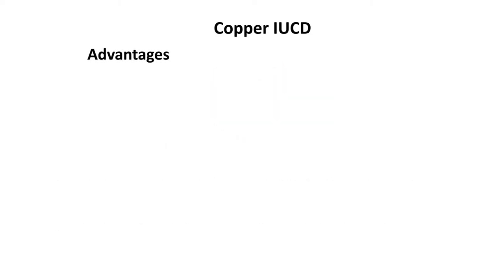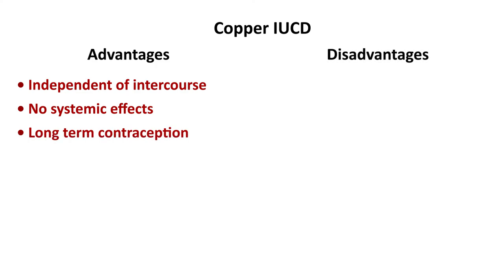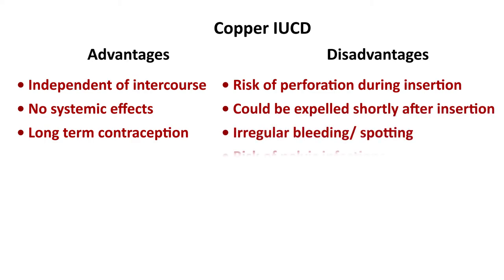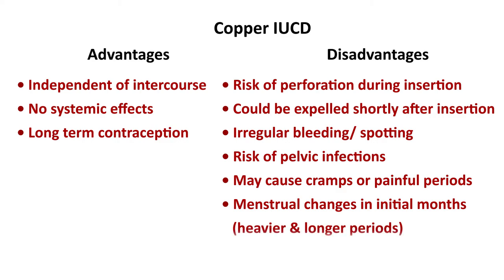Advantages of copper IUCD: it is independent of intercourse, has no systemic side effects, and provides long-term contraception. Disadvantages include risk of perforation during insertion, risk of expulsion shortly after insertion, irregular bleeding or spotting, risk of pelvic infection, cramps or painful periods, menstrual changes in the initial months, and the need for medical supervision before, during, and after insertion.